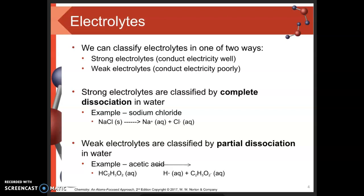When we look at strong electrolytes at the molecular level, we find a phenomenon known as complete dissociation — when that ionic crystal breaks entirely into pieces. For example, every single sodium chloride crystal breaks up into sodium ions and chloride ions, giving us 100% conversion.